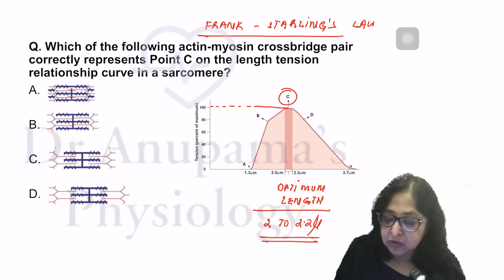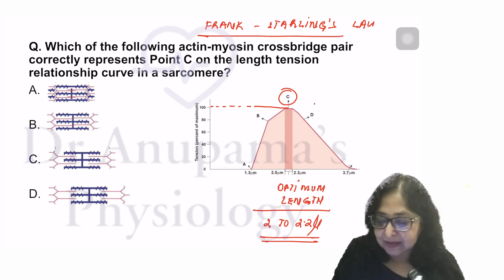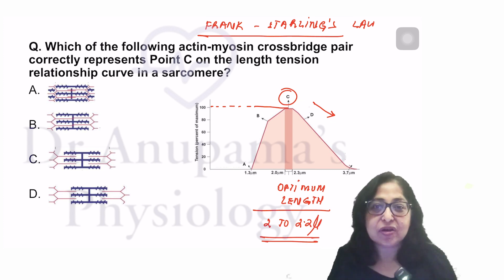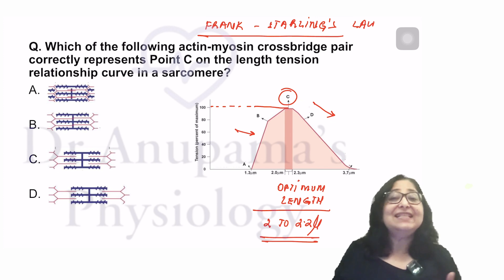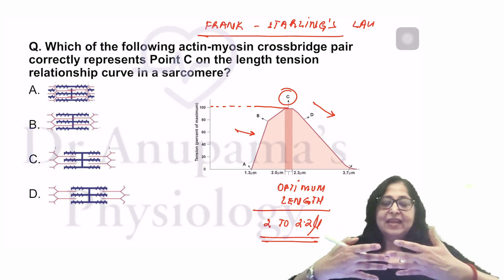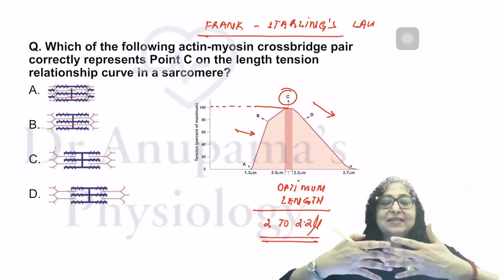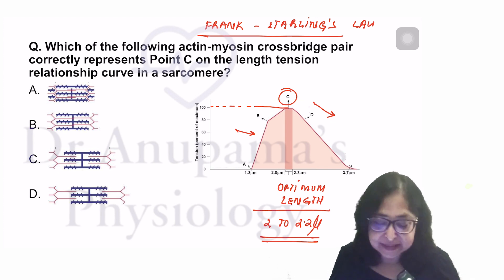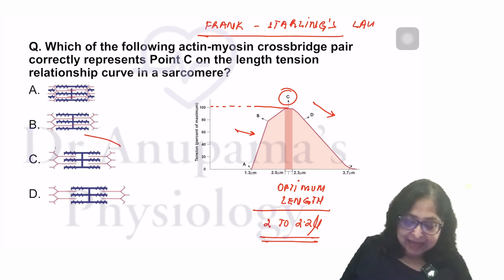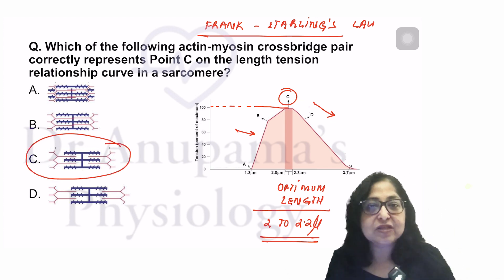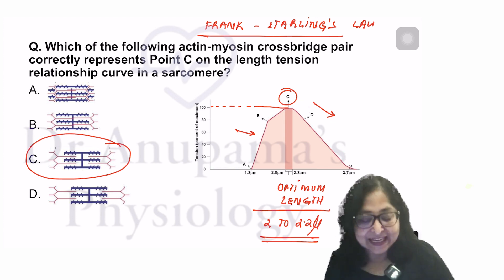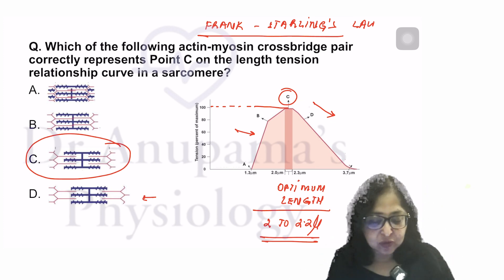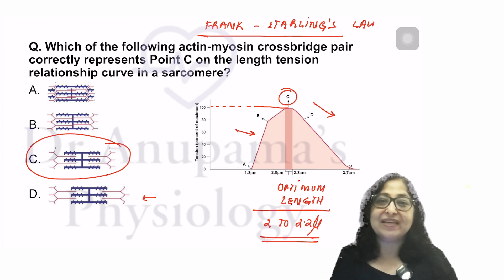If the sarcomere length goes beyond the optimum length, there is overstretching, so fewer actin-myosin cross-bridges form. If the sarcomere length is less than the optimum length, the actin filaments tend to overlap each other, again reducing the total number of cross-bridges. Therefore, the actin-myosin arrangement corresponding to optimum length is point C. Point D represents overstretching, and points A and B show overlap of actin filaments, decreasing the total number of cross-bridges.